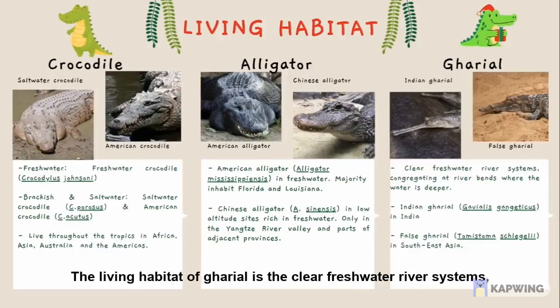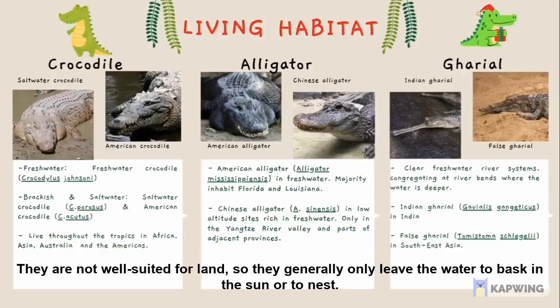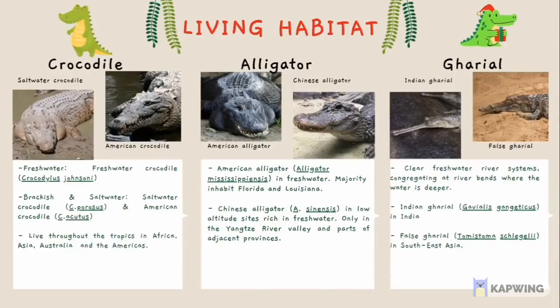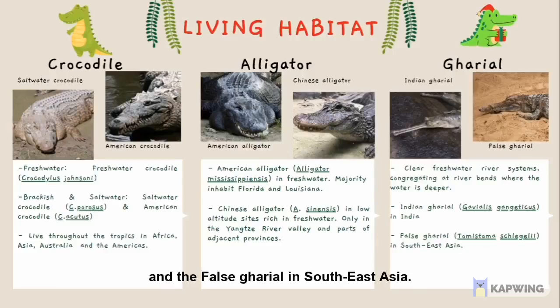The living habitat of Gharials is clear freshwater river systems, congregating at river bends where the water is deeper. They are not well suited for land, so they generally only leave the water to bask in the sun or to nest. There are only two living species: the Indian Gharial, found in India and surrounding areas, and the False Gharial in Southeast Asia.